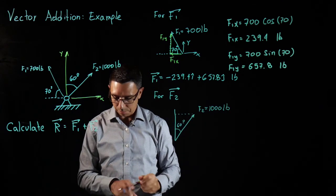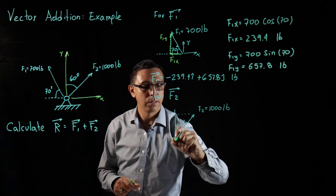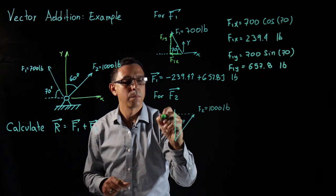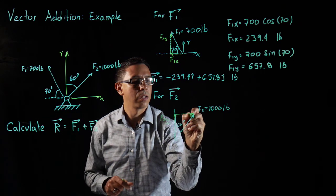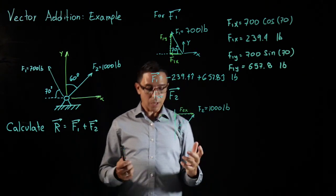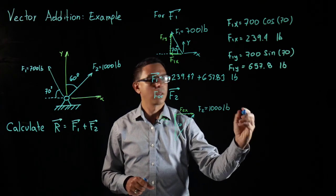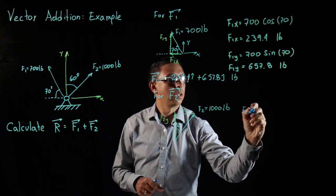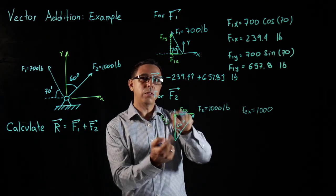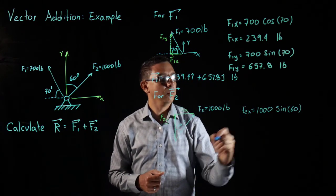and my F2X and F2Y are actually like in this location so this one over here is going to be F2Y, this one over here is F2X. So based on this triangle we can tell that my F2X is the magnitude which is 1000 pounds. We are looking at the opposite of the angle so that will be the sine of 60 degrees